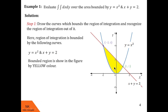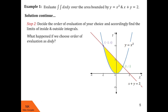In step 2, we decide the order of evaluation of our own choice. We will choose it in such a way that we do not need to split the region of integration. Let us see what happens if we choose the order dx dy. We throw arrows parallel to the x-axis from left to right. These arrows enter the region by crossing the parabolic curve, but while leaving, they cross two curves — the line as well as the parabola. So this does not fulfill the criteria, and we would need to split the region.